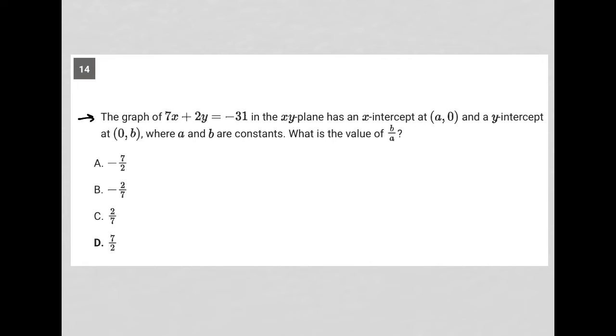This question says the graph of 7x plus 2y equals negative 31 in the xy plane has an x-intercept at (a, 0) and a y-intercept at (0, b) where a and b are constants. What is the value of b over a?